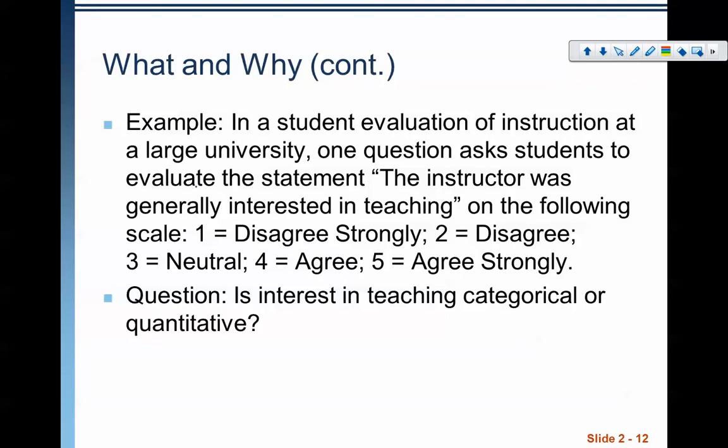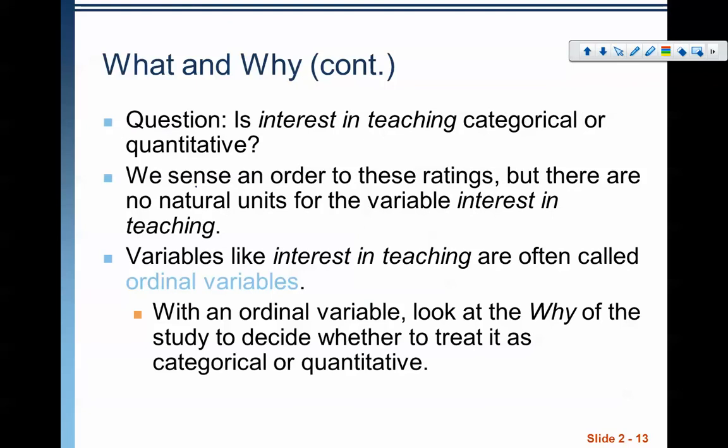The questions we ask a variable shape what we think about and how we treat the variable, because there are some cases where you might have something where you're not sure if it's categorical or quantitative. For example, in a student evaluation of instruction at a large university, one question asks students to evaluate the statement "The instructor was generally interested in teaching" on the following scale: 1 = Disagree Strongly, 2 = Disagree, 3 = Neutral, 4 = Agree, 5 = Agree Strongly. Is this categorical or is this quantitative?